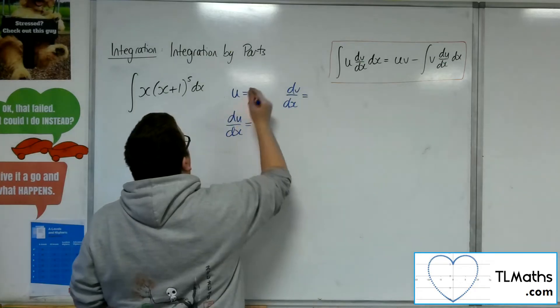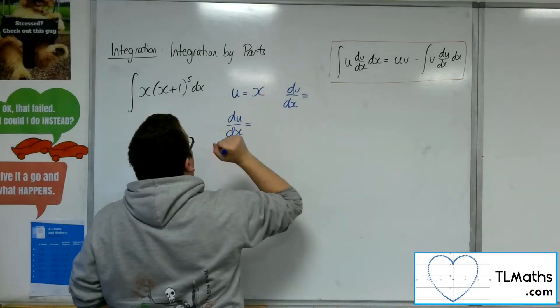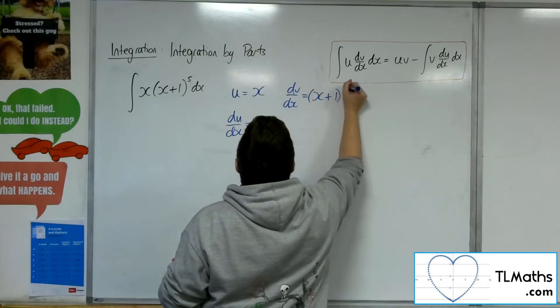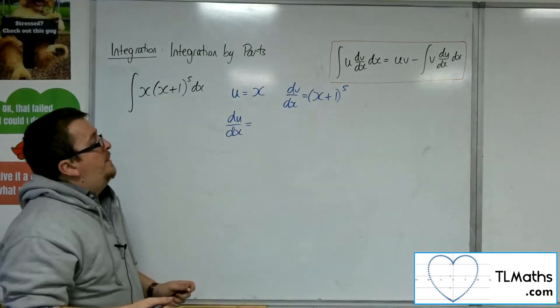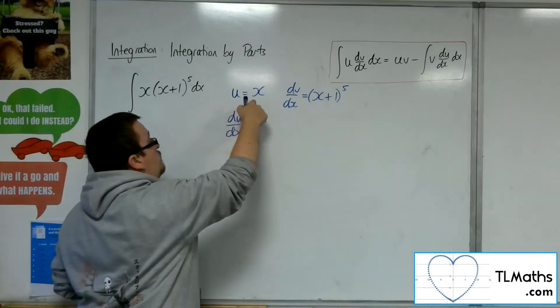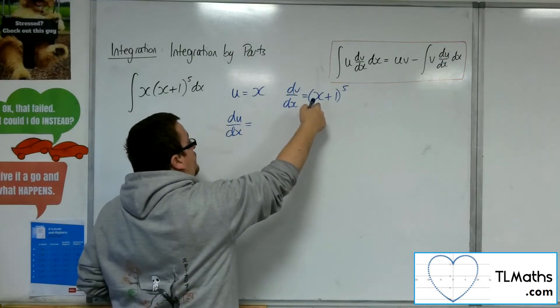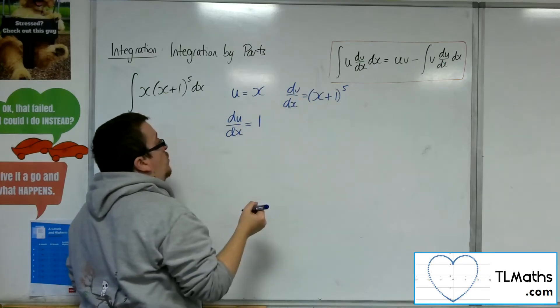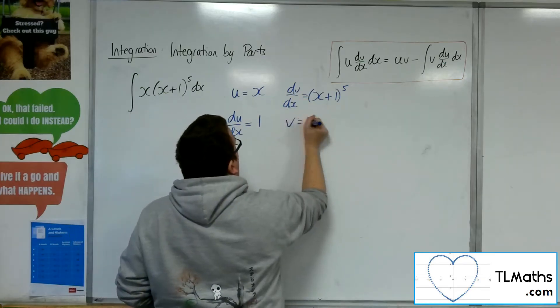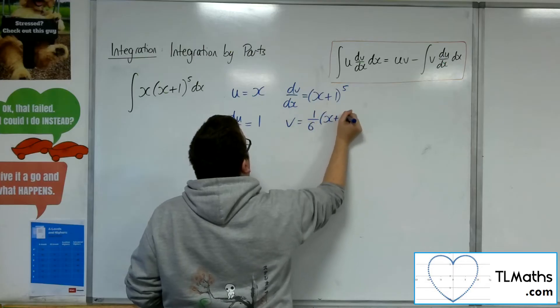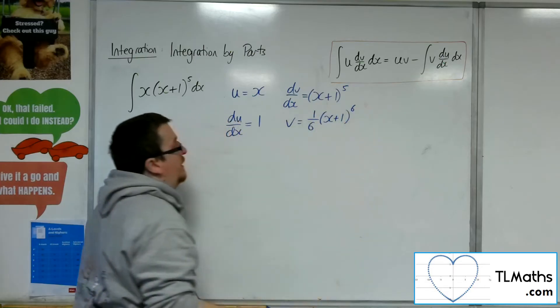So it would make more sense to have the u as the x and the dv by dx as the x plus 1 to the 5, rather than the other way around, because this will differentiate to 0 quicker than this one. So this differentiates to 1, and this will integrate to 1 sixth x plus 1 to the 6 by reversing the chain rule.